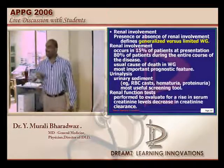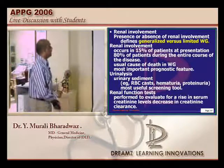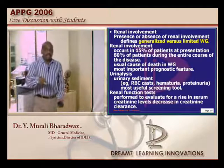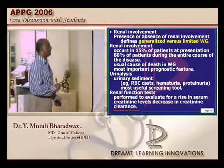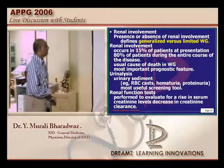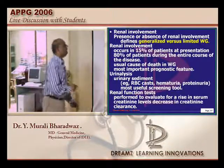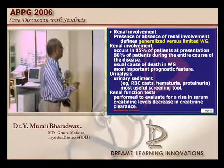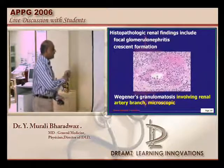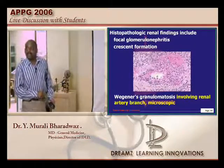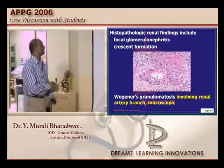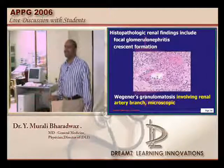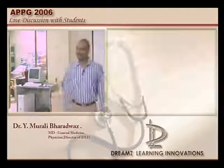Lung plus kidney — if these two features are present, think of Wegener's. The usual cause of death is renal involvement, and whether the renal is involved determines the prognosis. RBC casts, hematuria, and proteinuria can be found, and over time patients may progress to end-stage renal disease. This involves the renal vasculature being inflamed due to vasculitis. Out of 30 questions, let us see how many are typical and how many are atypical.